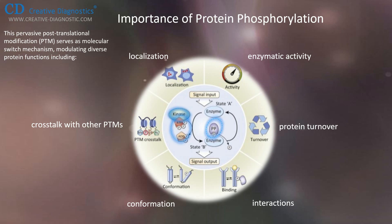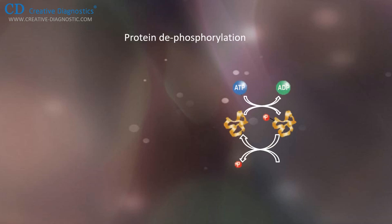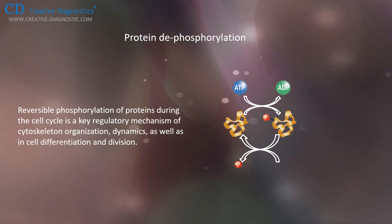These networks facilitate the transmission, processing, and storage of cellular information, allowing cells to rapidly respond to their environment. Protein dephosphorylation also plays a vital role in the regulation of protein function. Reversible phosphorylation of proteins during the cell cycle is a key regulatory mechanism of cytoskeleton organization, dynamics, as well as in cell differentiation and division.